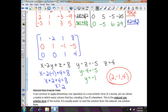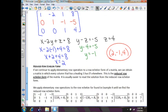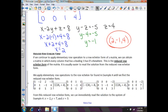Now we can keep going here. This is a form called reduced row echelon form. Now if we continue to apply elementary row operations to a row echelon form of a matrix, we can obtain a matrix in which every column that has a leading one has zeros everywhere else. This is the reduced row echelon form of a matrix. It's usually easier to read a solution from the reduced row echelon form. You don't have to do any equation solving once you put in reduced row echelon form.